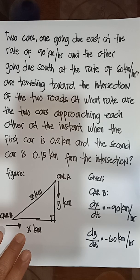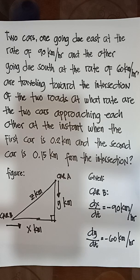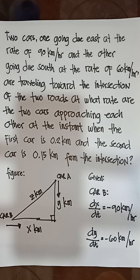Next example: two cars, one going due east at the rate of 90 km per hour, and the other going due south at the rate of 60 km per hour, are traveling toward the intersection of the two roads. At what rate are the two cars approaching each other at the instant when the first car is 0.2 km and the second car is 0.15 km from the intersection?